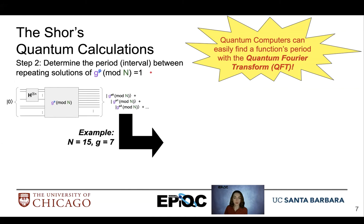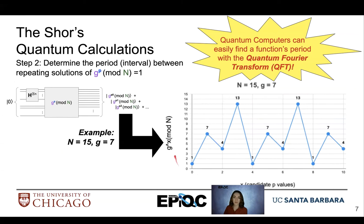So in this example, for n equal 15 and g equal to 7, we can see that we have a plot here of g to the x, g raised to the candidate p values mod n, versus different candidate values for p, so we'll call them x here. And we'll see that the value for p is 4. So the QFT would help us find this value of p equal to 4.